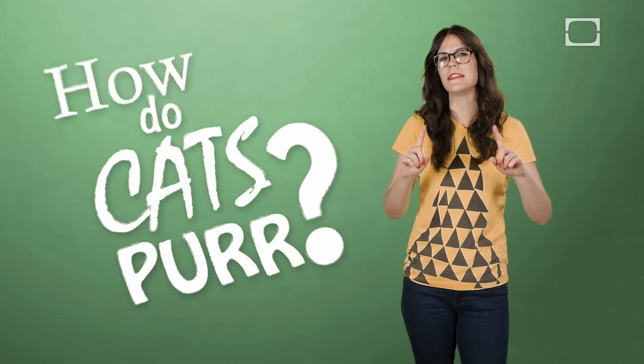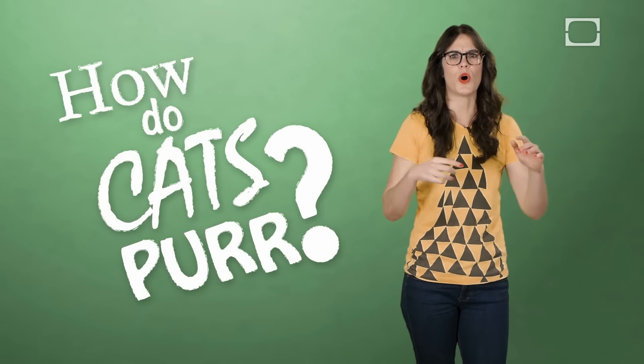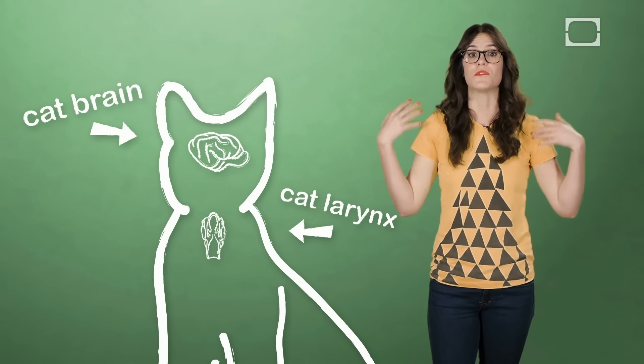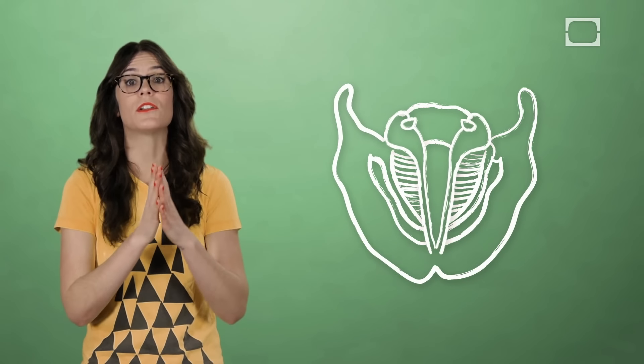But how do these non-roaring cats actually do the whole purring thing anyway? Well, the most accepted idea is that a cat's brain signals its laryngeal muscles in its voice box so that they vibrate. These muscles then act like a valve by opening and closing the glottis, which is the space between vocal cords.